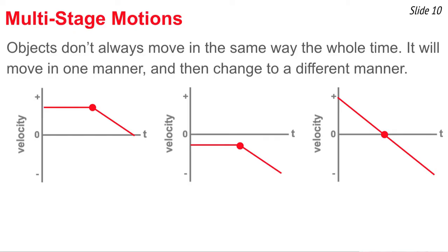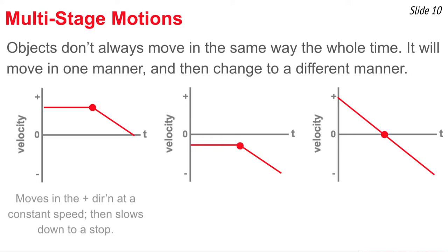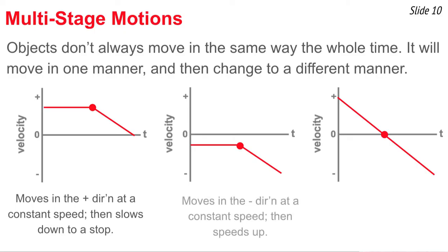Now let's consider multi-stage motions. In the first example, the line starts horizontal, then turns diagonal heading toward the time axis — the object initially has a constant positive velocity, then slows down to a stop. In the second example, a horizontal line below the axis becomes a diagonal line getting further from the axis — the object first moves at constant speed in the negative direction, then continues moving in the negative direction but begins speeding up.